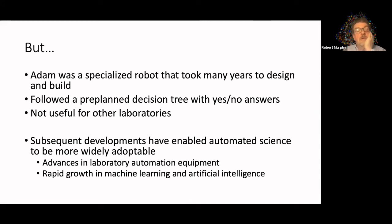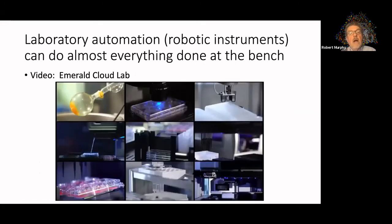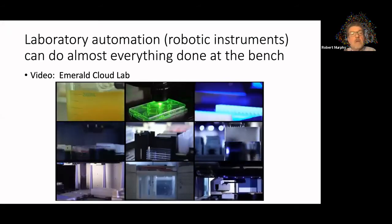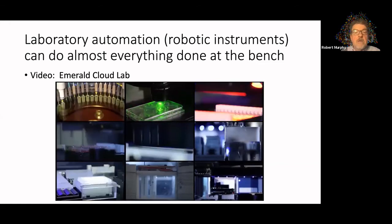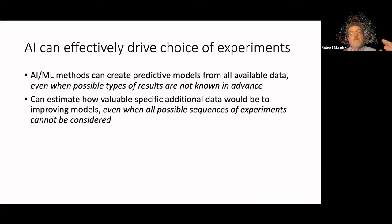In the interim years, two major things have enabled automated science to be more widely adoptable. One is dramatic advances in laboratory automation — much cheaper, much more capable, and many more types of instruments. And of course, rapid growth in machine learning and AI. There are instruments now that can do almost any experimental technique you can do on a benchtop.